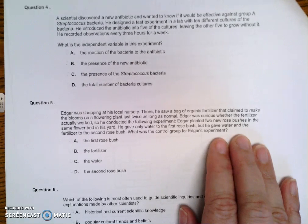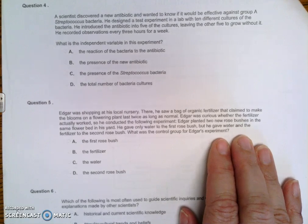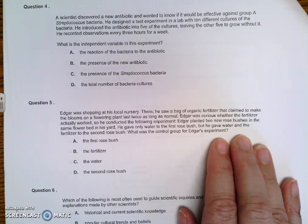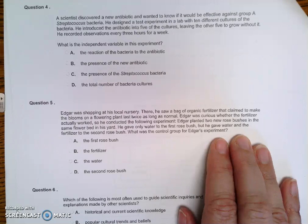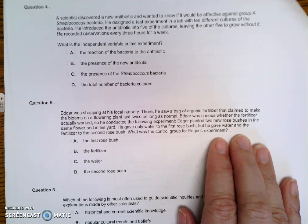A scientist discovered a new antibiotic and wanted to know if it would be effective against Group A Streptococcus bacteria. He designed a test experiment in a lab with 10 different cultures of the bacteria. He introduced the antibiotic into five of the cultures, leaving the other five to grow without it. He recorded the observations every three hours for a week.